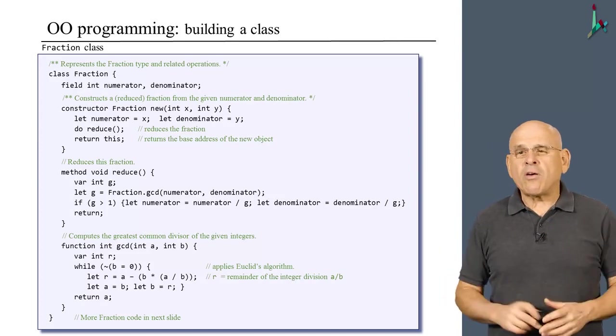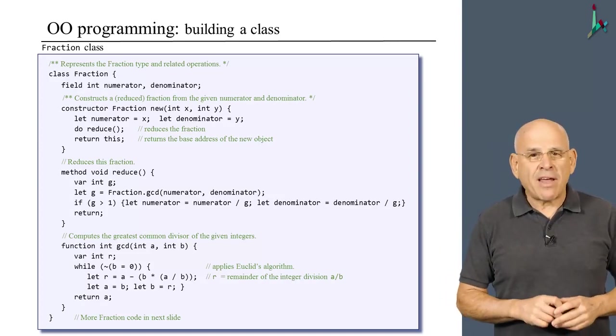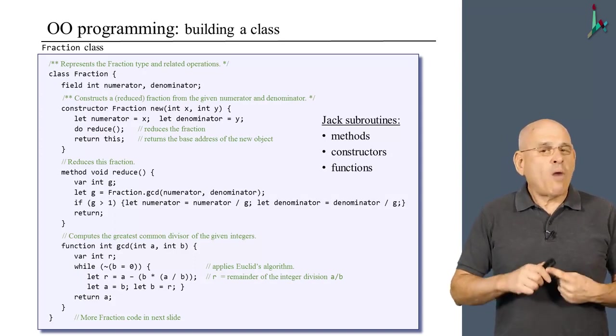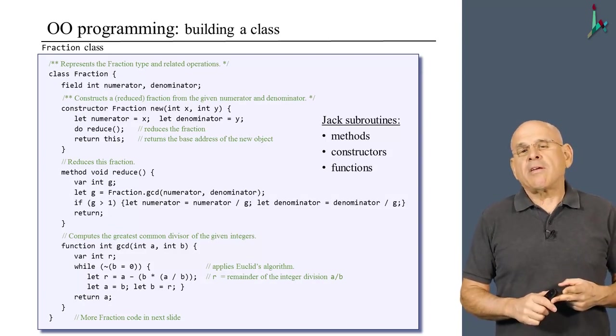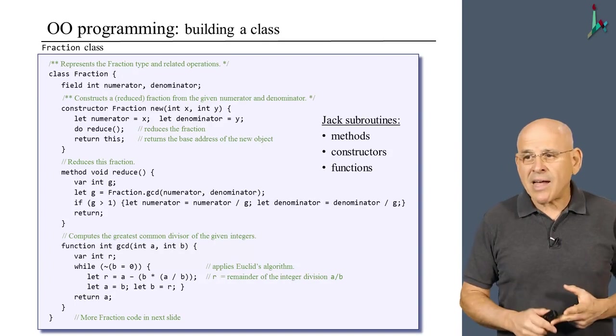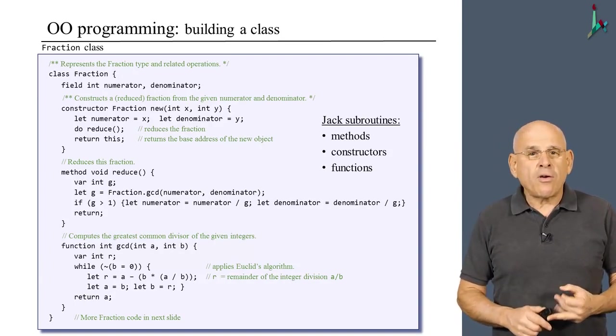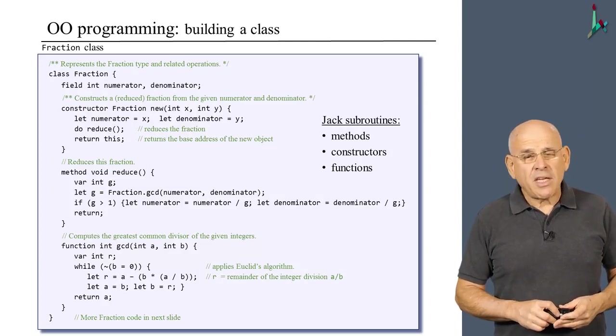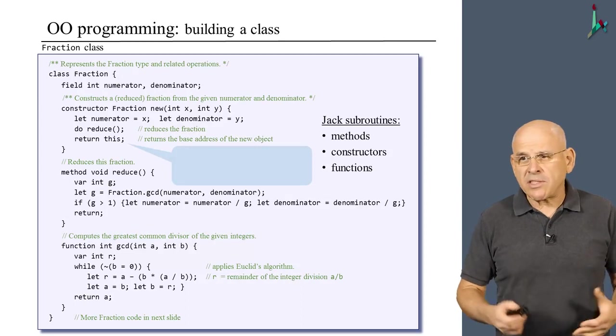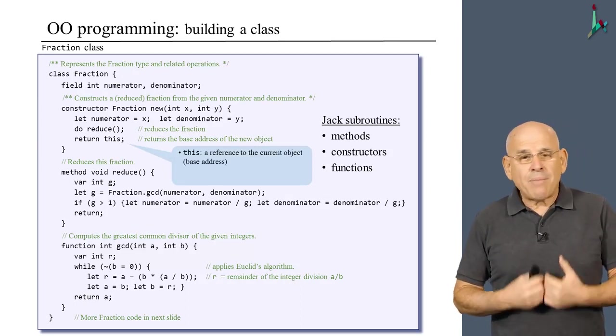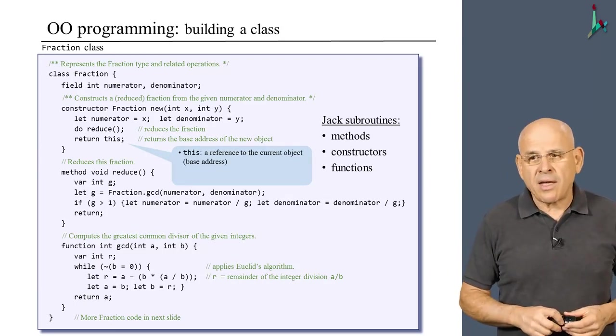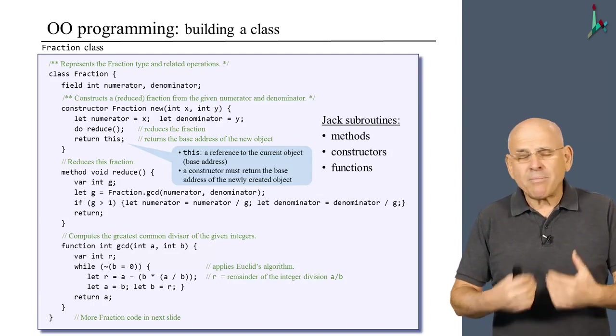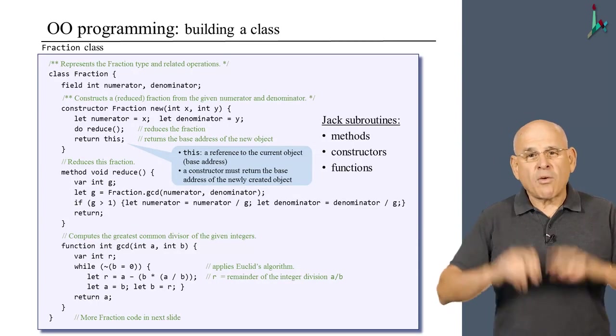And with that, I kind of like this slide because it shows you all the possible subroutines that are available in Jack. And these subroutines are methods, constructors, and functions. Methods are designed to operate on the current object. Constructors are designed to create new objects, which are instances of the current class. And functions are methods that operate on no object in particular. These are equivalent to static methods in Java. A few more things that we see here is first of all the keyword this, which is a standard reference to the current object. Internally, it's actually a memory address. It's the base address of the current object in the host RAM.